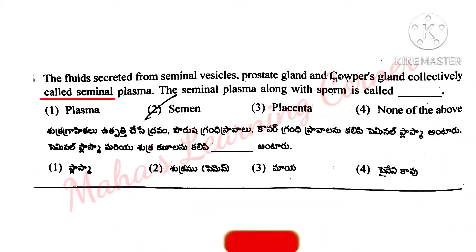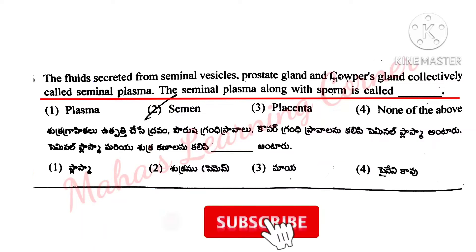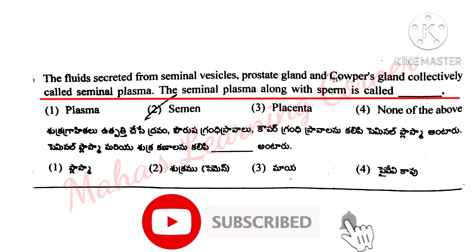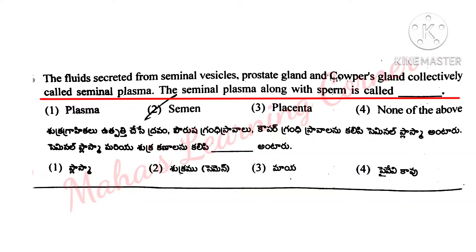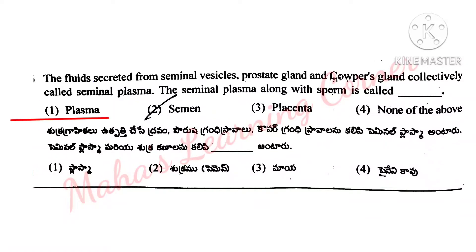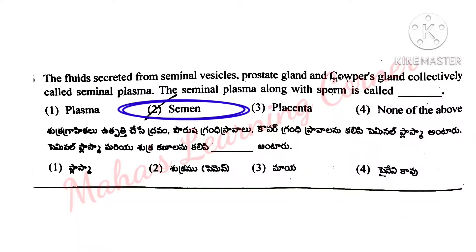The fluid secreted from seminal vesicles, prostate gland, and Cowper's gland collectively called seminal plasma. This seminal plasma along with sperm is called: plasma, semen, placenta, none of the above. Correct answer is option 2: semen.